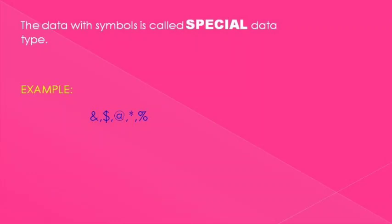The data with symbols is called special data type. What is mean by symbols? The symbols, the question mark, percentage, star, comma, plus, minus. These all are called as symbols. So this symbol data type is called special data type. These kind of symbolic data is called as special data types. Here are some examples for special data type.